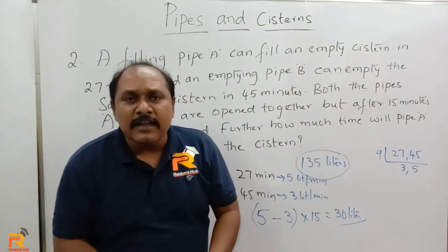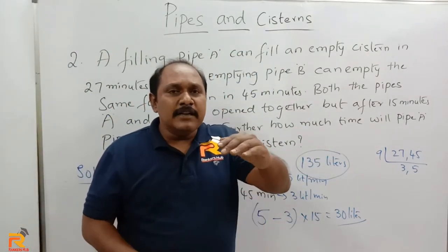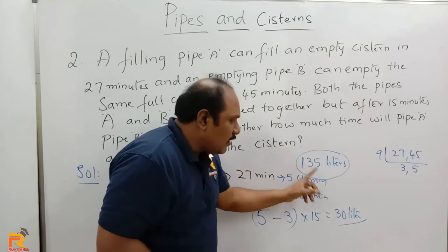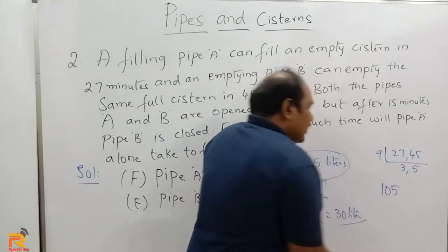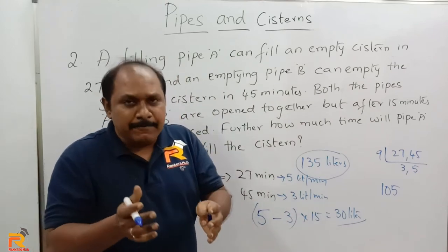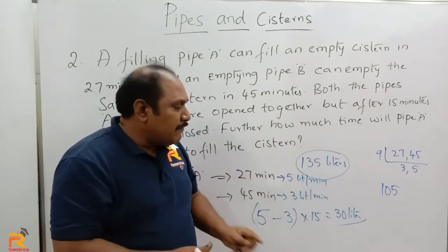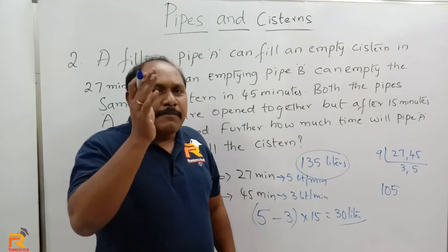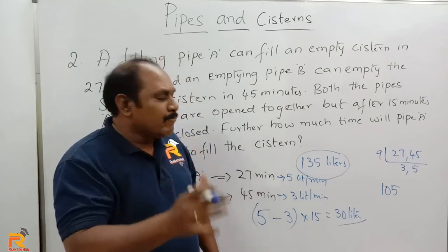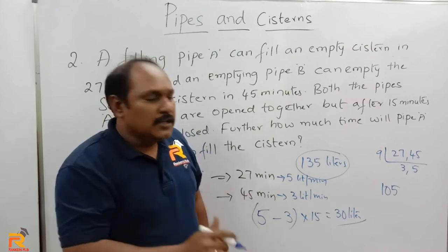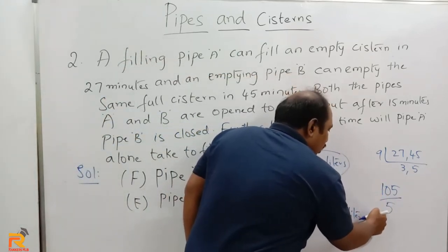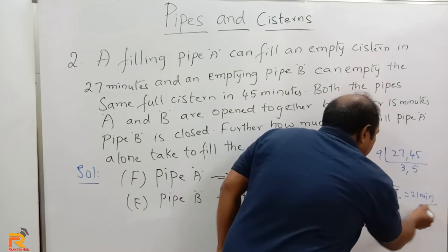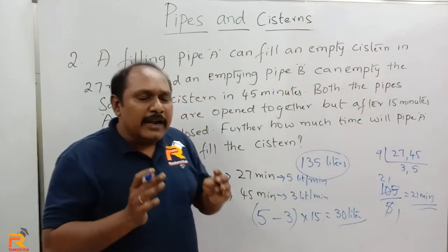The total capacity of the tank is 135 liters, but after 15 minutes only 30 liters are filled. So still 135 − 30 = 105 liters has to be filled. After 15 minutes, pipe B is closed, and the remaining 105 liters must be filled by pipe A alone. Pipe A fills 5 liters per minute, so to fill 105 liters it takes 105 ÷ 5 = 21 minutes.